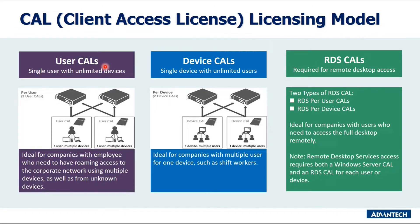With a User CAL, you purchase a CAL for every user who accesses the server — for services such as file storage or printing — regardless of the number of devices they use. This makes more sense if employees need roaming access to the corporate network using multiple or unknown devices, or if the organization has more devices than users. With a Device CAL, you purchase a CAL for every device that accesses the server, regardless of how many users use that device. Device CAL makes more economic and administrative sense if workers share devices, for example on different work shifts.